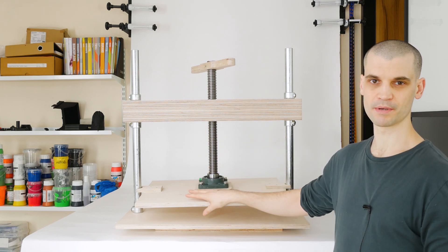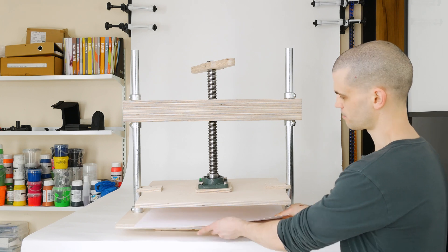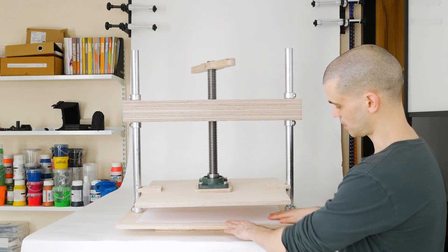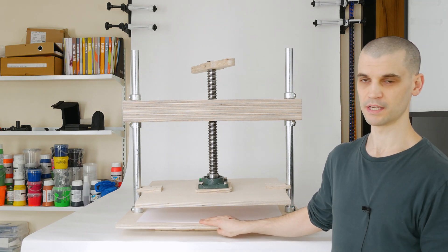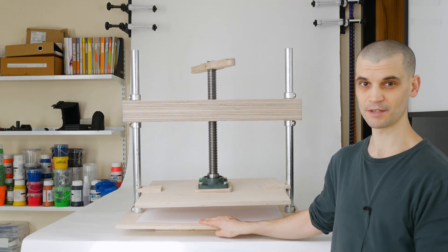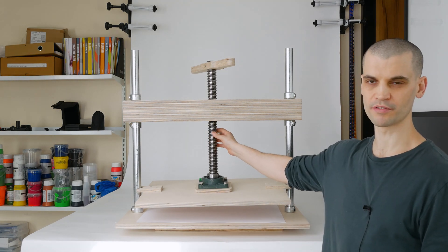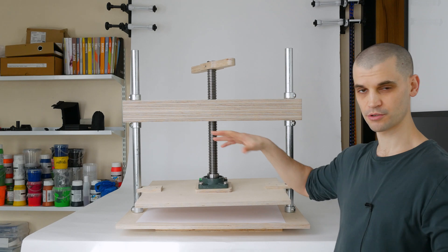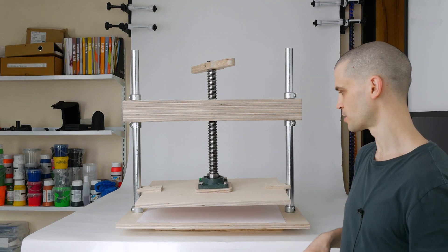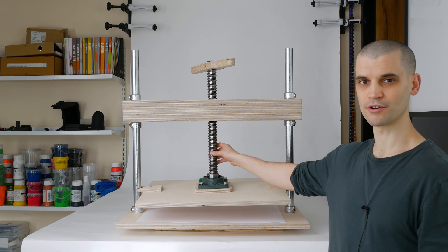So yeah this one is pretty big. It can fit up to A2. You can see here you just about squeeze an A2 sheet in there. That's as big as I wanted it to be. I think if you was going to do any bigger if you wanted to do like A1 which I can't really see why you would for book binding but you would usually go with kind of like two lead screws to distribute the pressure more evenly across the board. I think this is really kind of like the limit you can get with a single lead screw.